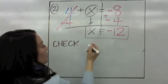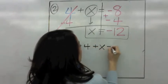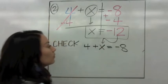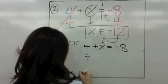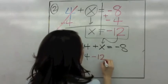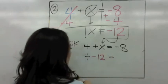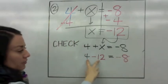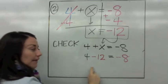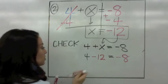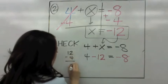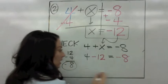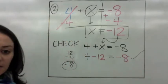Remember the original equation is 4 plus x equals negative 8. We're going to check our value by substituting negative 12 in the place of x. So is 4 plus negative 12 equal to negative 8? These are different signs — different signs subtract. 12 take away 4 is 8, and the sign of the bigger number is negative. So the answer is negative 8. Very good.